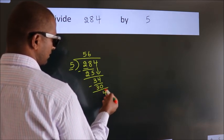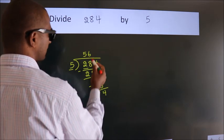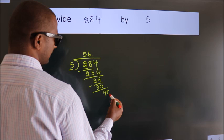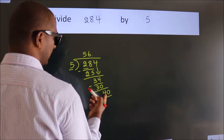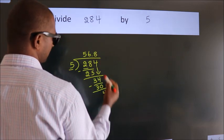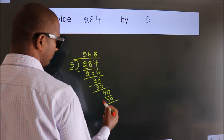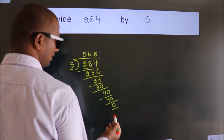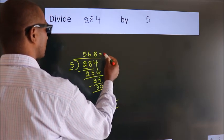After this, no more numbers to bring down. So what we do is put a dot, take 0. So 40. When do we get 40 in the 5 table? 5 eights, 40. Now we subtract. We get 0. We got remainder 0, so this is our quotient.